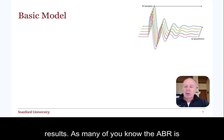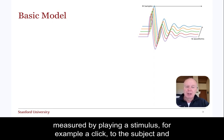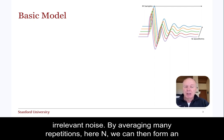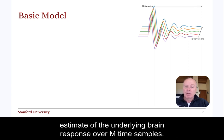As many of you know, the ABR is measured by playing a stimulus, for example a click, to the subject and measuring responses. The brain's responses are weak and buried in irrelevant noise. By averaging many repetitions, we can form an estimate of the underlying brain response over m time samples.